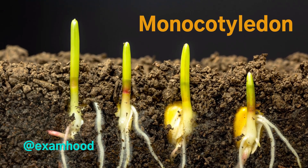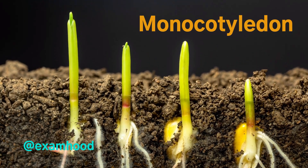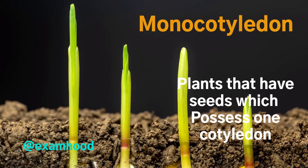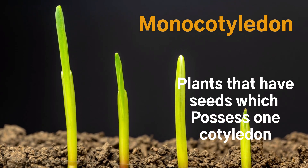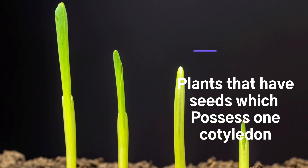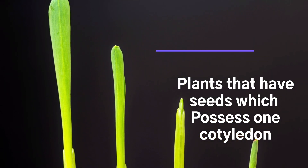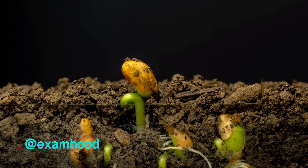Monocotyledons are plants that have seeds which possess just one cotyledon each, or one seed leaf. Examples of monocotyledons are palms and cereals, for example maize.